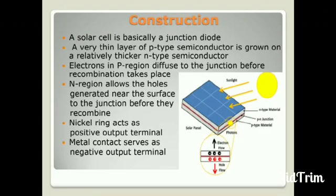Construction of solar cells: A solar cell is basically a PN junction diode. A very thin layer of P-type semiconductor is grown on a relatively thicker N-type semiconductor. Electrons in the P region diffuse to the junction before recombination takes place. The N region allows holes generated near the surface to reach the junction before they recombine. Nickel ring and metal contacts act as positive and negative output terminals.